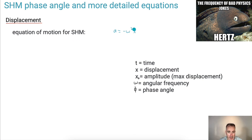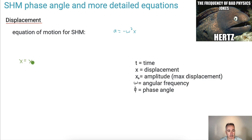Thankfully, we don't have to know how to get to this solution, but just so you know, one of the solutions to this differential equation goes like this: X equals X₀ times sine of (omega·T plus phi). I'll explain all the variables here in a second. This is a formula in your data booklet.